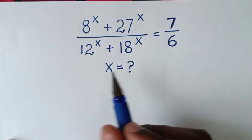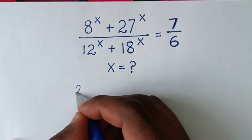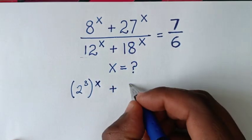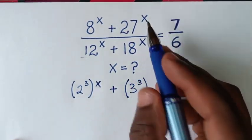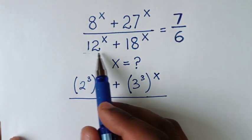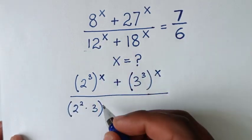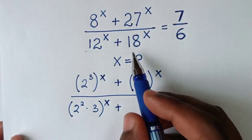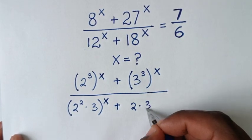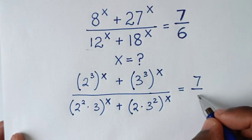In the first step we will change 8, 27, 12, and 18 into exponent form. 8 is the same as 2³, then bracket this power of x; plus 27 is the same as 3³, then bracket this power of x; over 12, which is 2²×3, bracket power of x; plus 18, which is 2×3², bracket power of x; is equal to 7/6.